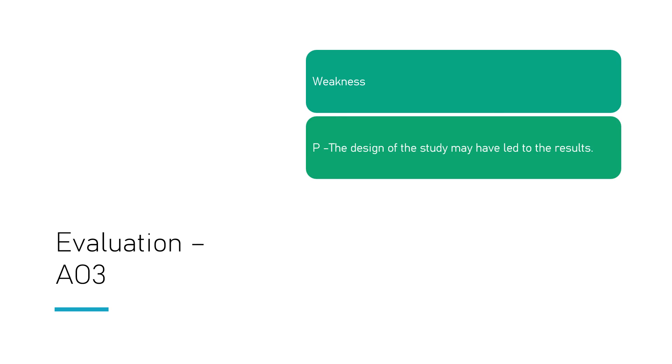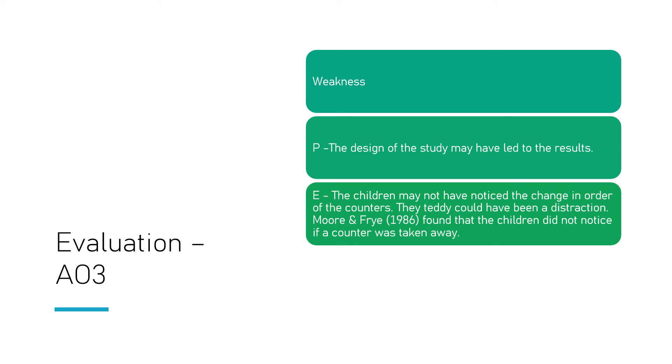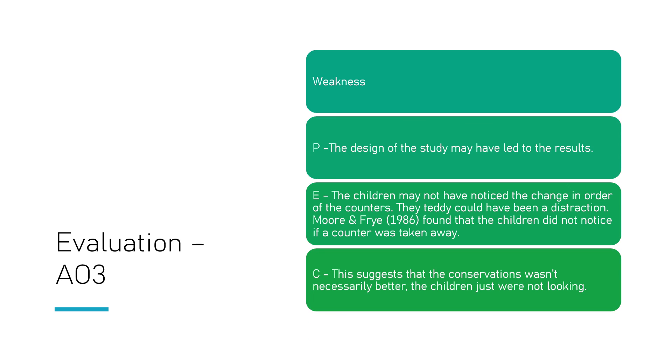Next then, another weakness is that this study may have had design flaws on its own. The study was saying that Piaget may have got it wrong, well actually this may have led to errors in this study. The way this study was designed may have led to the results in itself. So the children may not actually have noticed the change in the counters. Obviously you introduce a teddy to nursery and early primary age children, they're going to be very focused on the teddy and maybe not noticing the counters. So Moore and Frye actually did a replication of the study and they found that the children weren't actually noticing the counters, they didn't know that a counter had been taken away, they were distracted too much by the teddy. This suggests that the conservation wasn't actually necessarily better like McGarrigle and Donaldson had suggested, the children just weren't actually paying attention.